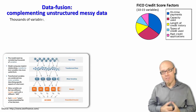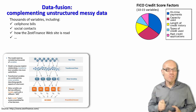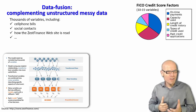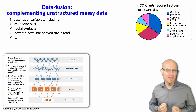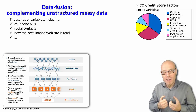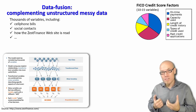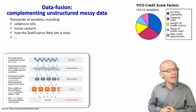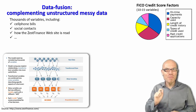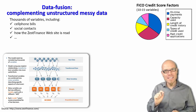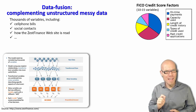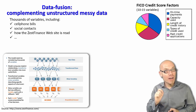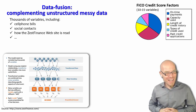Recently some companies came up — for example, this company Zest Finance — and they used thousands of variables, including very alternative variables. For example, your cell phone bills and how you paid them. So even if you never had a credit history, if you had a cell phone, they used this to estimate your credit worthiness. Your social contacts on social media sites — who you are friends with and how they behave — and even things like how you surfed on the Zest Finance website, how you read it, what kind of clickstream you had. And that gave a lot of information away about how worthy you are of getting a credit.